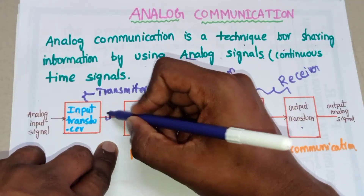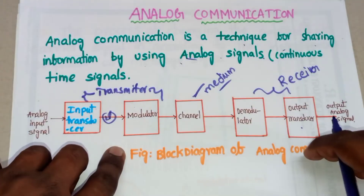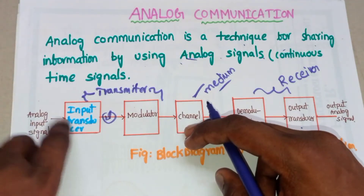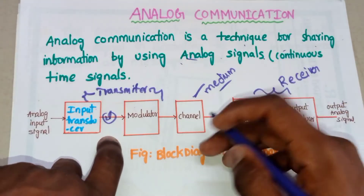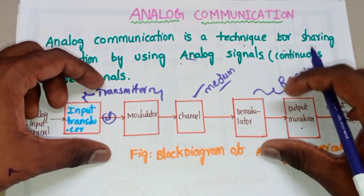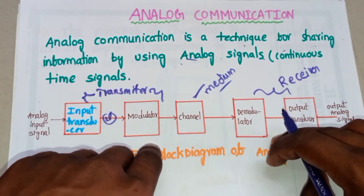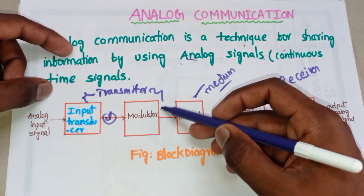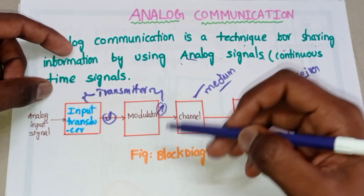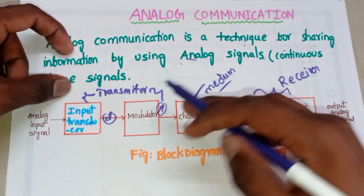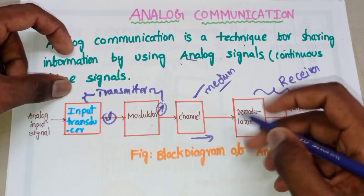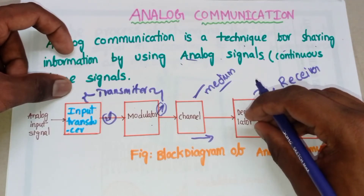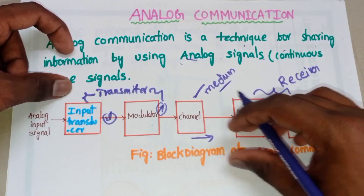After the input transducer, the signal is in electrical form. The modulator is also an electronic circuit used to transmit our message signal over a longer distance. Suppose the transmitter and receiver are far apart — the distance between them is very long. To transmit the message signal over that longer distance, we need to apply modulation. The modulator performs the modulation operation, and after modulation, the analog signal is transmitted through the channel.